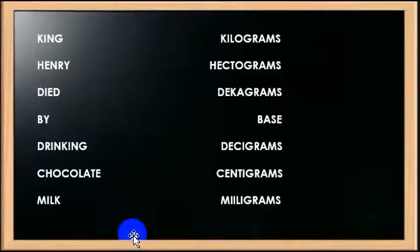Alright. So King Henry died by drinking chocolate milk. Which will remind you of what the place here. And so that is the memory aid that you can use to just work out the kilograms, hectograms, decagrams, base, which is meters, liters, watts. Drinking chocolate milk. Decigrams, centigrams, milligrams. So this will be deciwatts, centiwatts, or milliwatts.